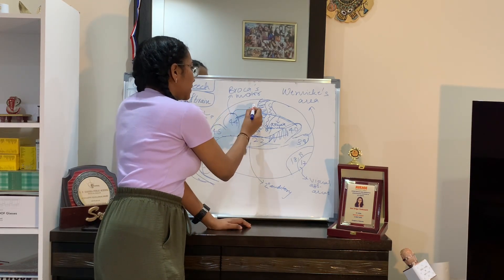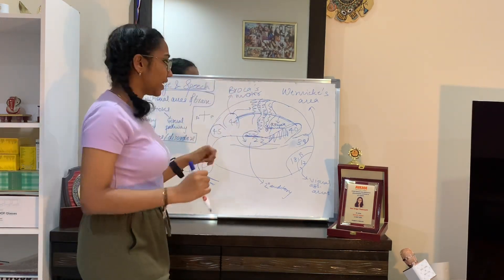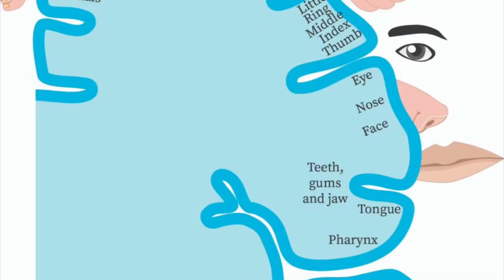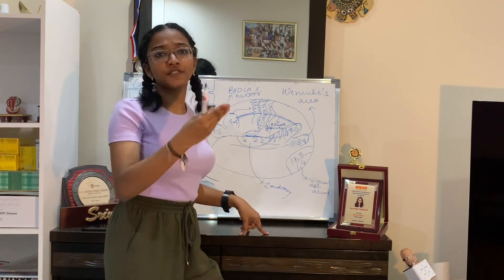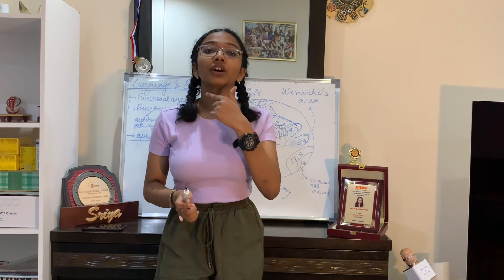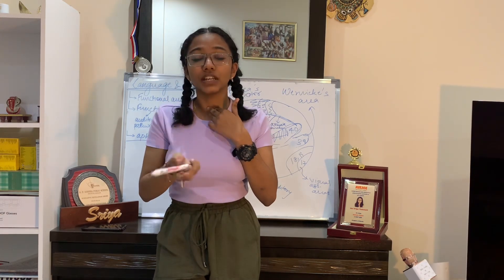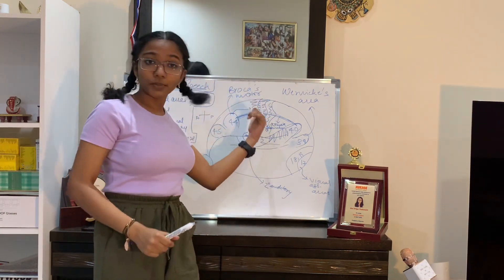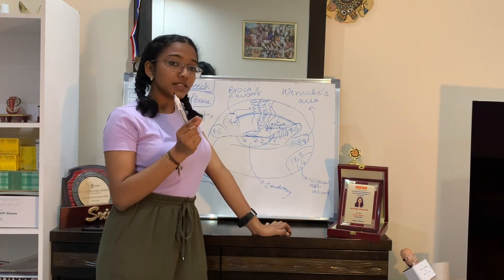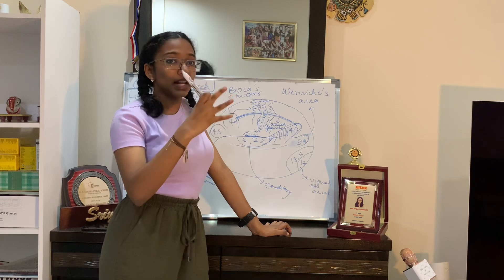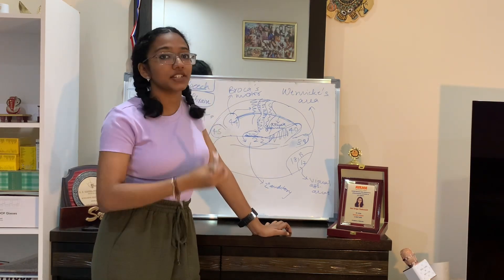After Broca's area forms the words, signals go to the pre-motor cortex and then the primary motor cortex. These areas sequentially activate the specific muscles responsible for speech production — the tongue, teeth, jaw, and larynx. This is illustrated by the motor homunculus, where the largest space is dedicated to vocalization, meaning speaking is the most precisely controlled activity performed by our motor cortex.